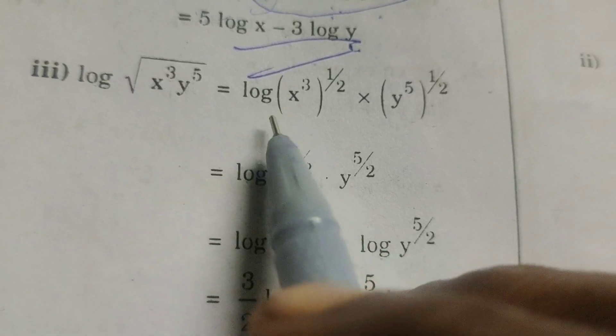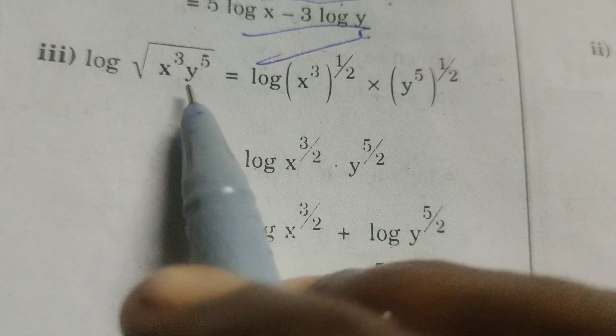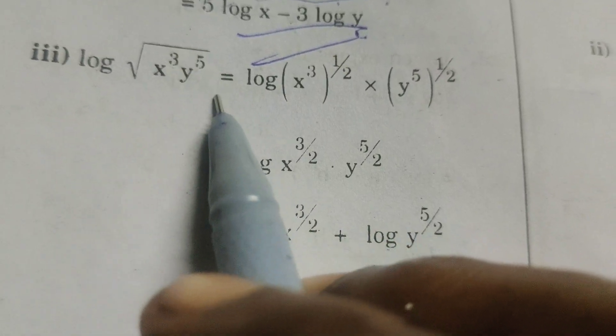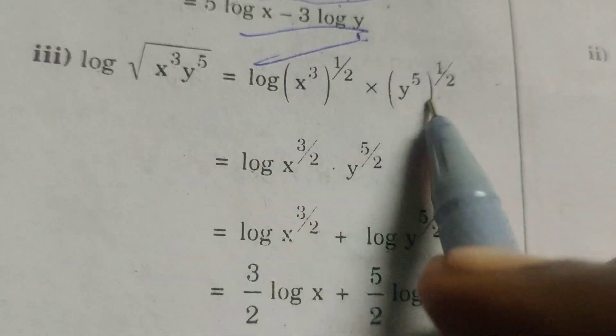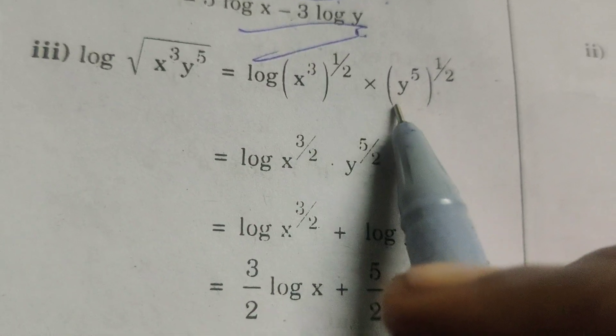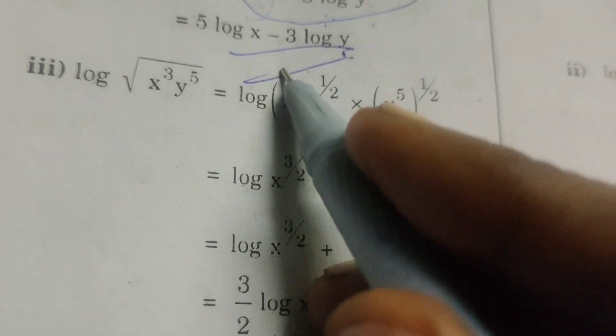Here write this as x cube whole power half, y power 5 whole power half. Here write log of x cube whole power half into y power 5 whole power half.